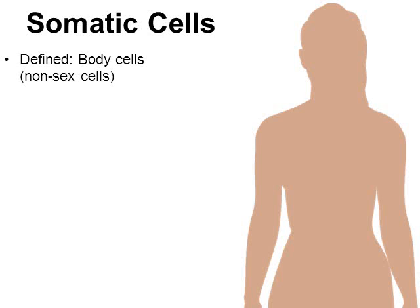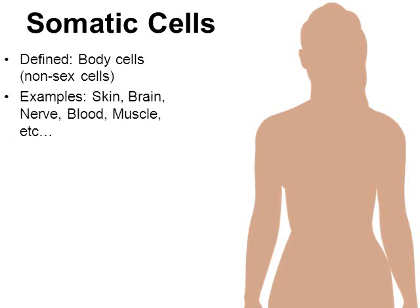Let's look at what are called somatic cells. Somatic cells are defined as body cells — cells of your body, non-sex cells. Examples include skin cells, brain cells, nerve cells, muscle cells, white blood cells, and red blood cells. These are what we mean by somatic cells.